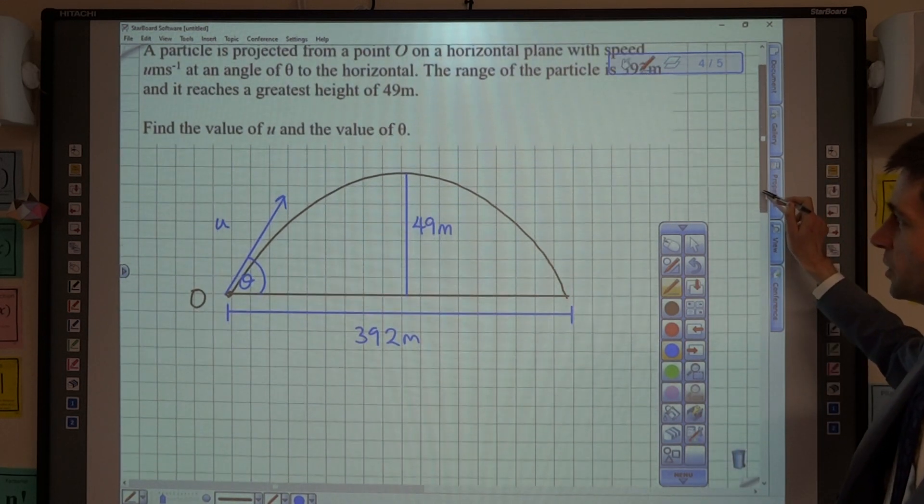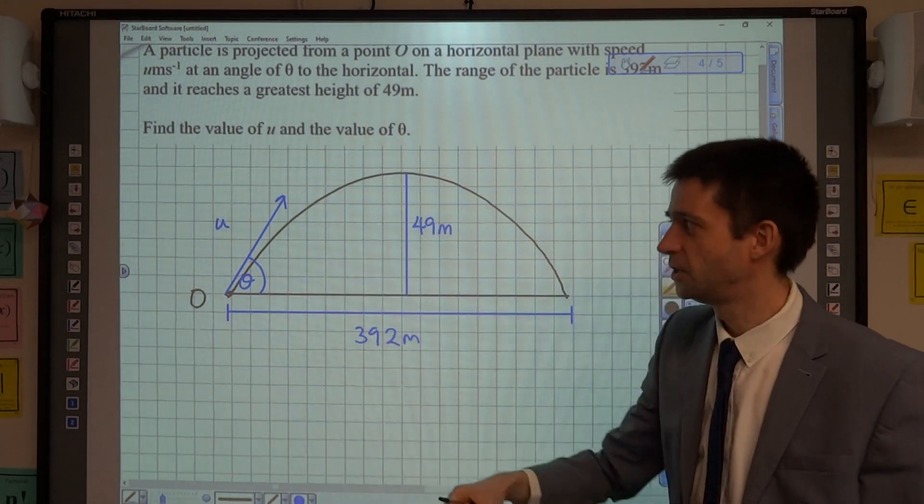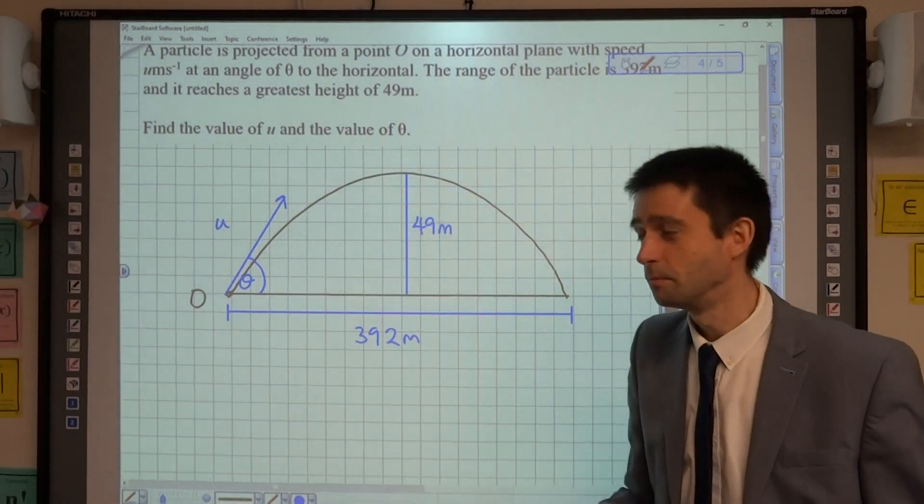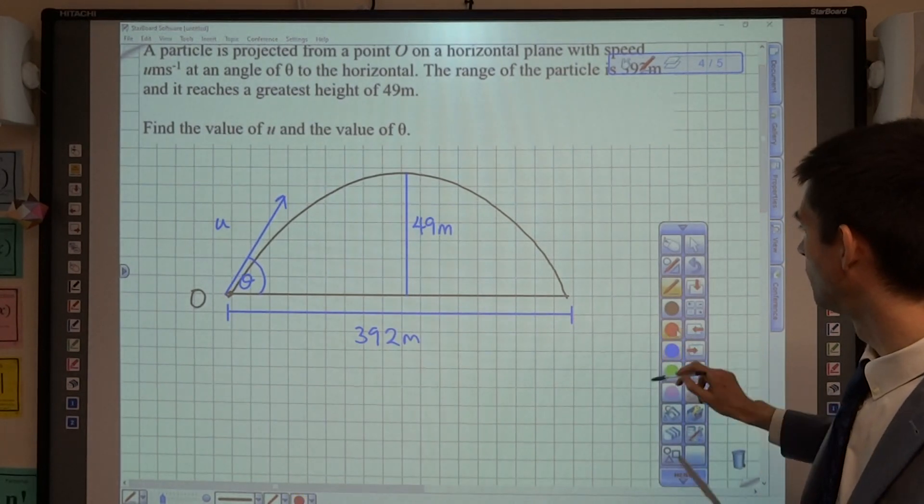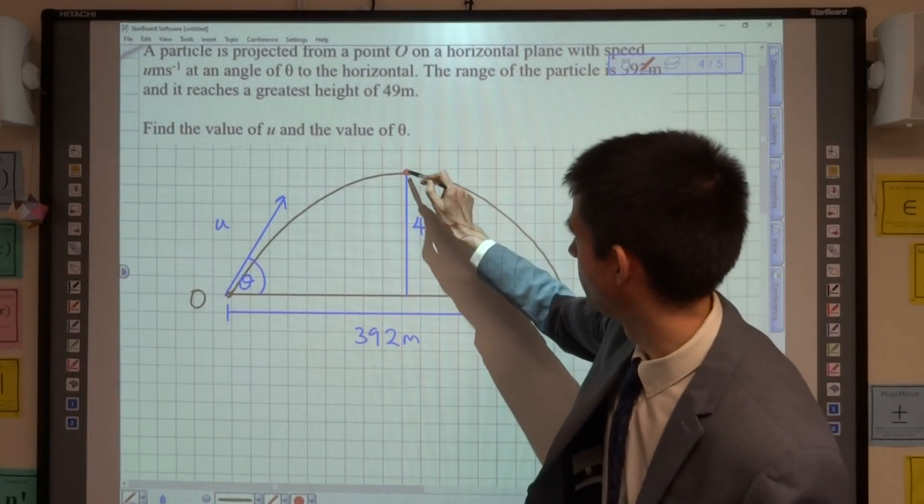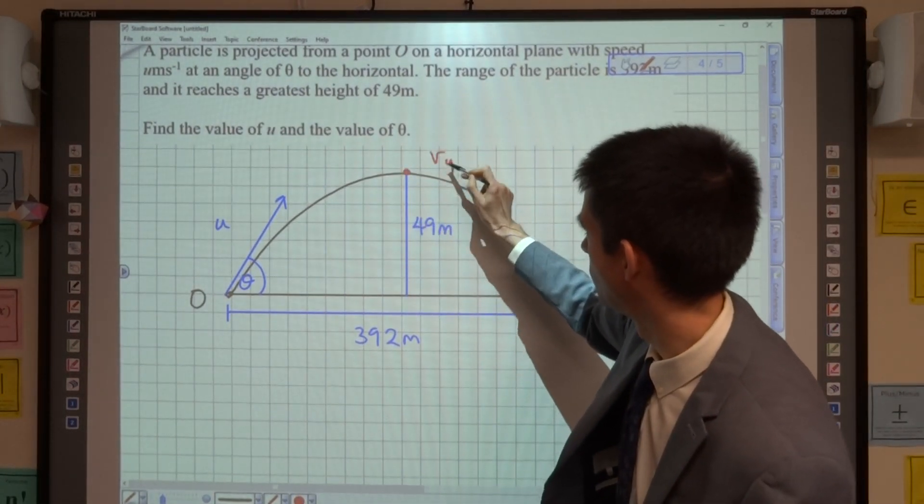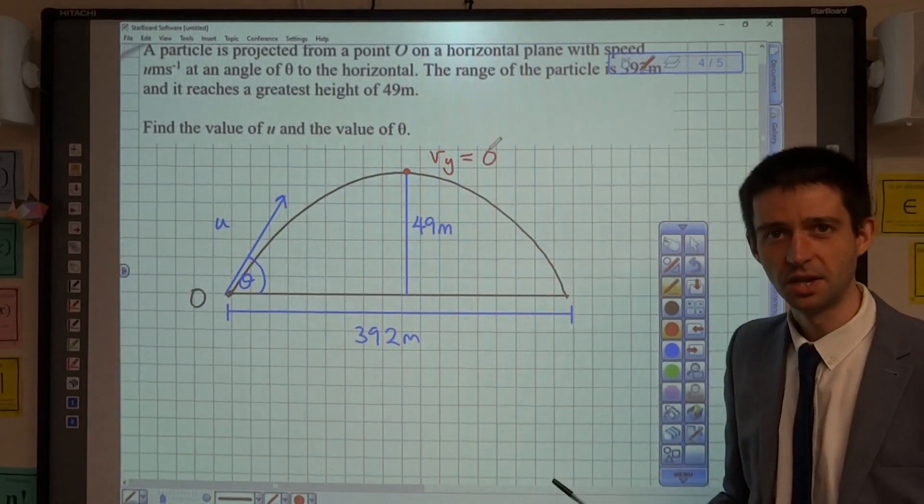Now, what we want to think about here is, when we've got two unknowns, we need to make sure that we're calculating at the same point. And the point that I want to calculate at is this point here, because I know that at this point here, the vertical component of velocity will be zero.